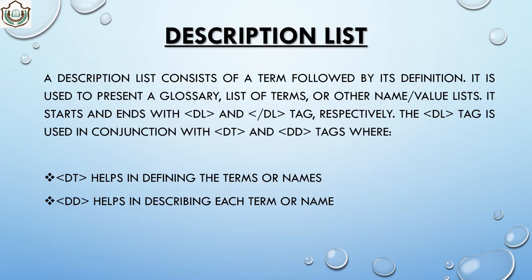Next is description list. A description list consists of a term followed by a definition. It is used to present a glossary, list of terms, or name-value pairs. It starts with dl and ends with slash dl. The dl tag is used in conjunction with dt and dd. The dt tag defines the term or name, and dd describes or defines each term. If you are writing what something is, you use dt for the term and dd for the description.